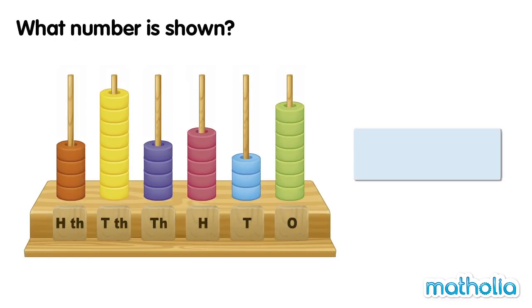What number is shown? Let's count the beads in each place on the place value abacus. In the 100,000s place, there are four beads. In the 10,000s place, there are eight beads.